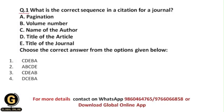Question 1: What is the correct sequence in a citation for a journal? Whenever you write a full research report and it gets published in a journal, at the end of each research report we write references — both at the end and within the text. There is a proper referencing style, called the sequence of a citation. The options given are: pagination, volume number, name of the author, title of the article, and title of the journal.